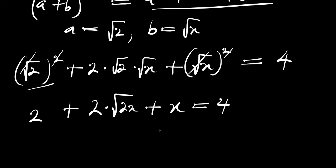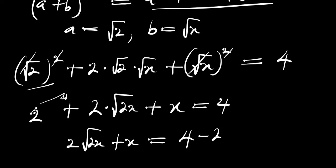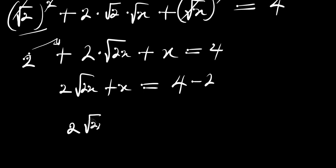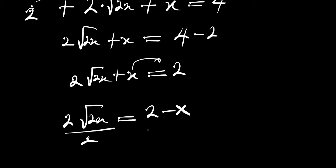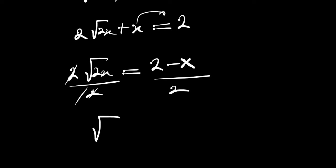The next thing we can do is move the 2 over, and we are going to have 2 times root of 2x plus x equals 4 minus 2, which gives us 2 times root of 2x plus x equals 2. Then we move the x across: 2 times root of 2x equals 2 minus x. Dividing each part by 2, we get root of 2x equals (2 minus x) divided by 2.